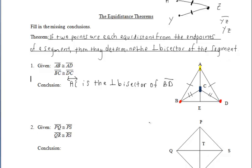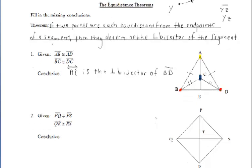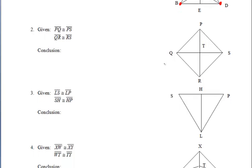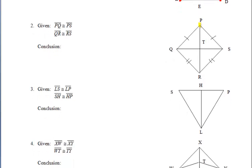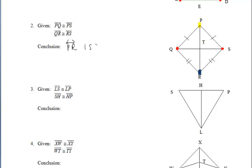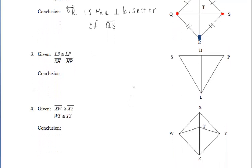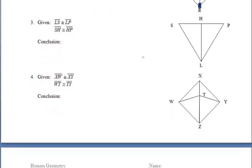Let's take a look at another example. Let's fill in our tick marks based off of the givens. We have point P that is equidistant from points Q and S — the same distance from Q as from S. And R is also equidistant from those same two points. So that means those two points, P and R, determine the perpendicular bisector of segment QS.